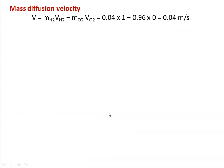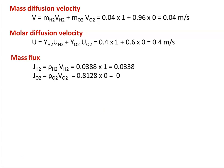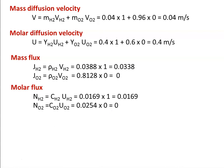Mass average velocity: V = MH2·VH2 + MO2·VO2 = 0.04 × 1 + 0.96 × 0 = 0.04 m/s. Molar average velocity: U = YH2·UH2 + YO2·UO2 = 0.4 × 1 + 0.6 × 0 = 0.4 m/s. Mass flux: JH2 = ρH2 × VH2 = 0.0338 × 1 = 0.0338. JO2 = ρO2 × VO2 = 0.8128 × 0 = 0. Molar flux: NH2 = CH2 × UH2 = 0.0169 × 1 = 0.0169. NO2 = CO2 × UO2 = 0.